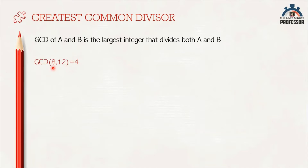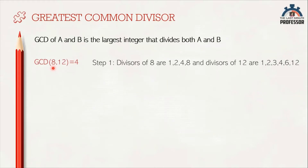The first step is to list the divisors of both numbers. A divisor is an integer that divides another number completely with 0 remainder. So, divisors of 8 are 1, 2, 4, and 8. Divisors of 12 are 1, 2, 3, 4, 6, and 12.